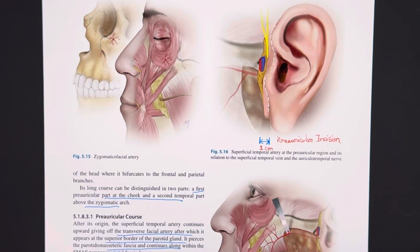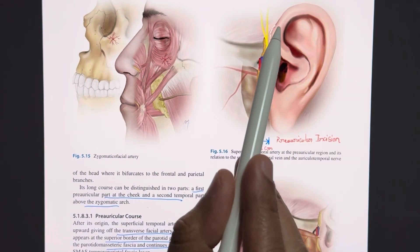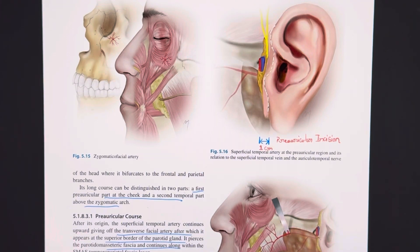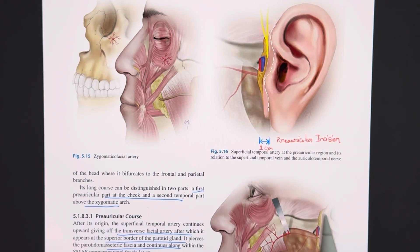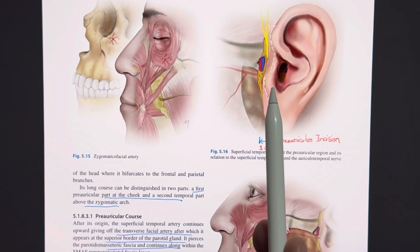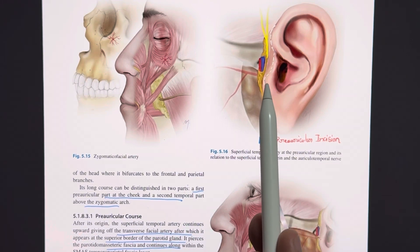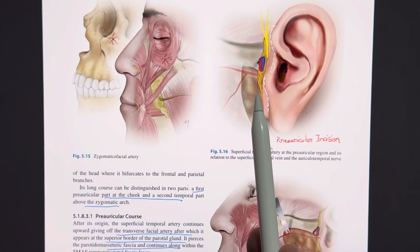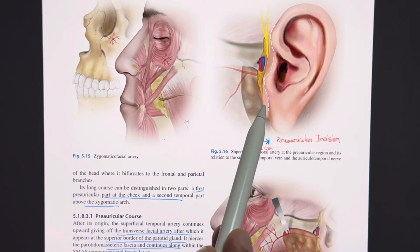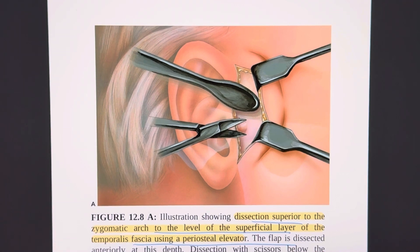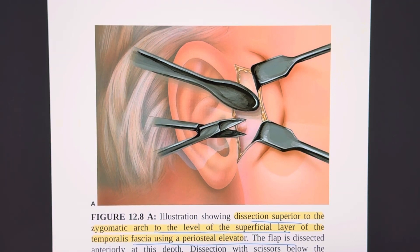Now that we have understood the anatomy of the region, we come on to how to mark the incision. The incision is marked as close to the tragus as possible, because the superficial temporal artery and vein lie 0.5 to 1 centimeter in front of the anterior edge of the tragus at a depth of 1 centimeter. So the incision should be kept as close to the tragus as possible.